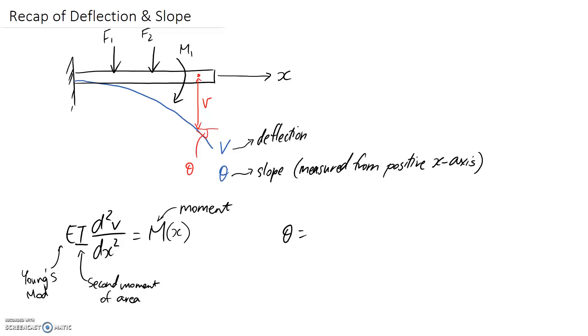In fact, your slope is equal to the derivative of deflection with respect to direction along the x-axis. Slope is like gradient of the lines - you're just finding the gradient of this curve.